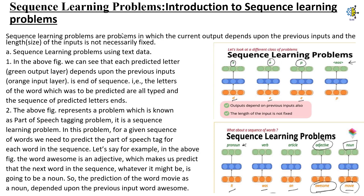Introduction to Sequence Learning Problems. Sequence learning problems are problems in which the current output depends upon the previous inputs and the length of the inputs is not necessarily fixed. In sequence learning problems using text data, each predicted letter in the output layer depends upon the previous inputs in the input layer. It's the end of the sequence — the letters of the word which was to be predicted — and then the sequence of predicted letters ends. The above figure represents a problem known as part of speech tagging.